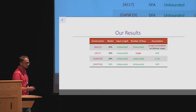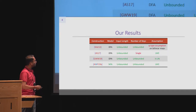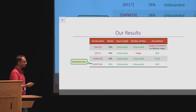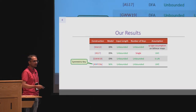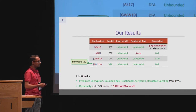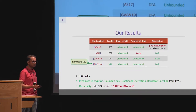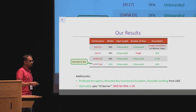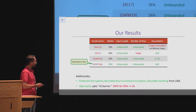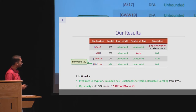Our work constructs ABE for non-deterministic finite automata with unbounded number of keys and unbounded length attributes from the learning with errors assumption. Our construction works in the symmetric key setting. From 2012 there was no progress on how to support non-deterministic finite automata, and it was explicitly left as an open problem by Brent in 2012. We construct it for the first time, and additionally leverage our techniques to generalize it to predicate encryption, bounded key functional encryption, and reusable garbling for NFAs from LWE. We also show a barrier in obtaining fully collusion-resistant FE for DFAs, in the sense that it implies I.O. from standard assumptions.